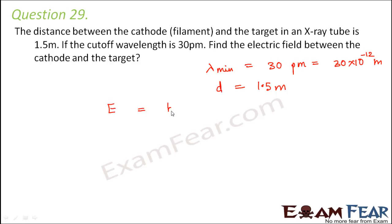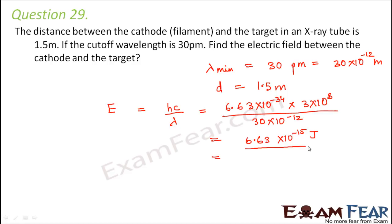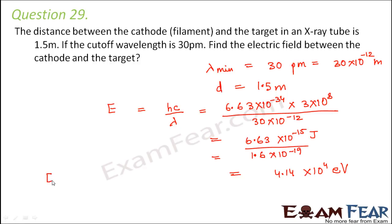The energy is hc divided by lambda. Using h = 6.63 × 10⁻³⁴, c = 3 × 10⁸, and lambda = 30 × 10⁻¹² meters, the energy comes out to 6.63 × 10⁻¹⁵ joules. Converting to electron volts by dividing by 1.6 × 10⁻¹⁹ gives 4.14 × 10⁴ electron volts. Since energy equals charge times potential difference, the potential difference equals energy divided by charge.